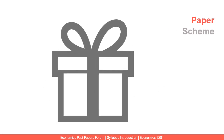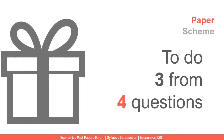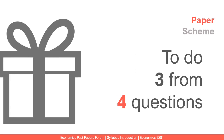From 2020, section B in paper two will give you four questions, out of which you have to do three. Previously there were six questions with a choice of three; now there is only a choice of one extra — you can do any three out of four questions.